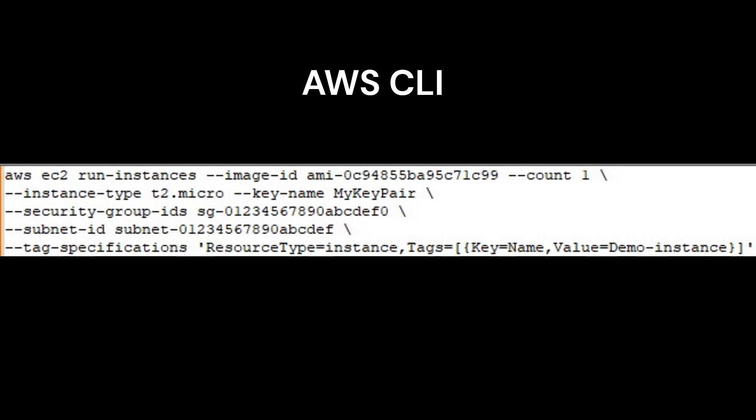The AWS CLI is a command line interface for interacting with AWS services. It allows you to perform many of the same actions that you can perform through the AWS Management Console, but from the command line. To spin up an EC2 instance with the name Demo Instance and port 80 enabled using the AWS CLI,